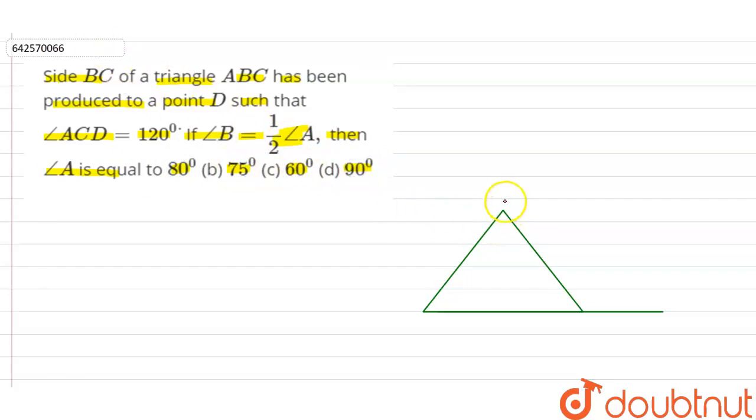So first of all, let's suppose this is a triangle A, B, C and here the question is saying side BC of a triangle has been produced to point D. So let's suppose this is point D.